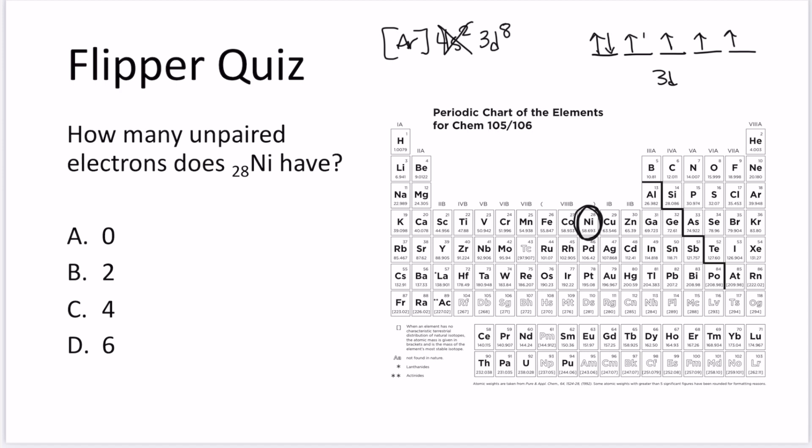So my 6th, 7th, and 8th electrons are going to be paired, but I'm going to have two of these d electrons that are going to be unpaired. So B is going to be the correct answer.